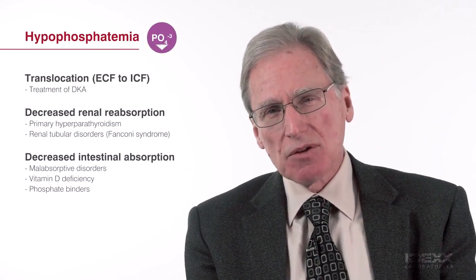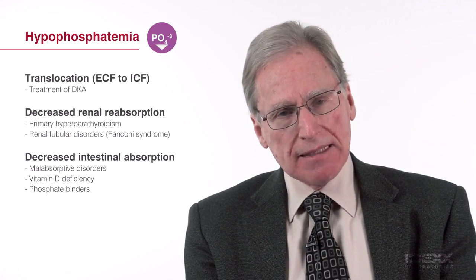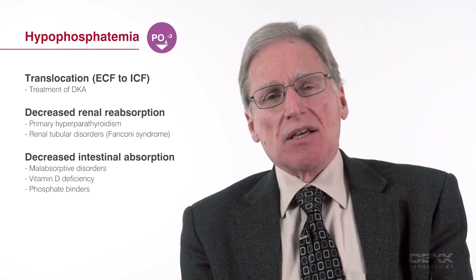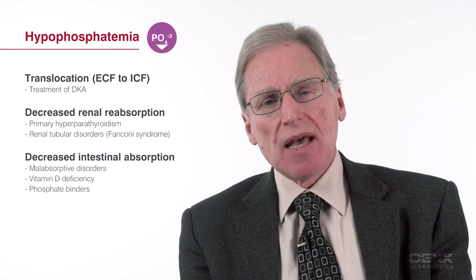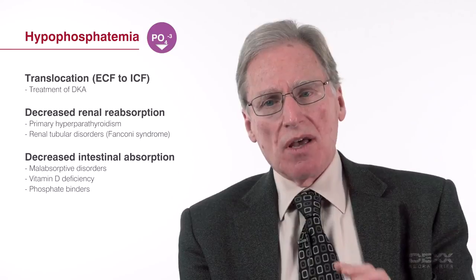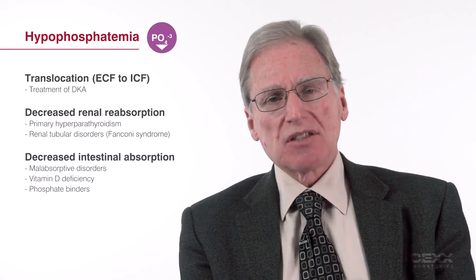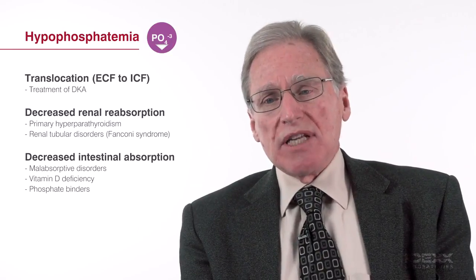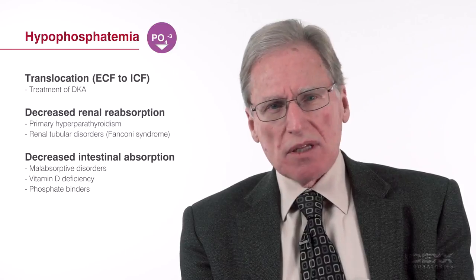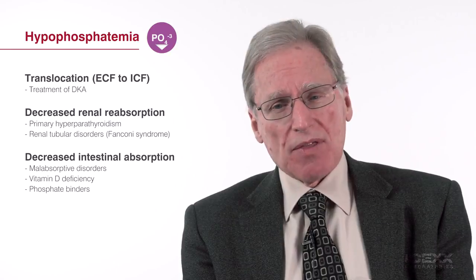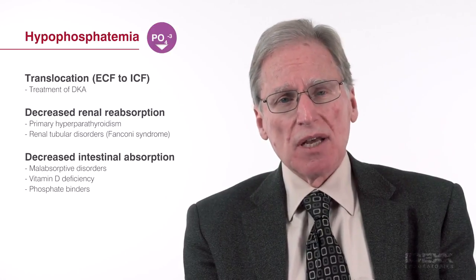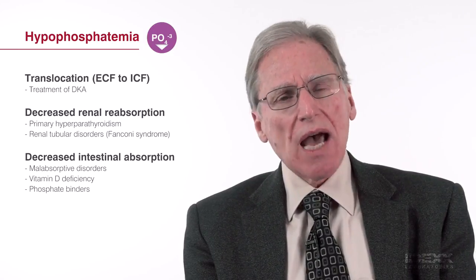Hypophosphatemia is a relatively uncommon electrolyte disturbance in dogs and cats. When you analyze that situation, consider whether translocation from extracellular fluid to intracellular fluid is responsible. A great example is when you treat a patient with diabetic ketoacidosis (DKA): when you treat with insulin and glucose goes inside the cells, phosphorus and potassium also move inside the cells, contributing to hypophosphatemia and hypokalemia. Decreased renal absorption of phosphorus is relatively uncommon and only likely with primary hyperparathyroidism. Decreased intestinal absorption can occur — for example, with phosphorus binders in a kidney disease patient — but in general, hypophosphatemia is relatively uncommon compared to hyperphosphatemia.